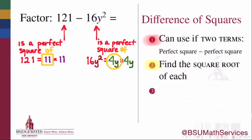Likewise, 16y squared, because it's equal to 4y times 4y, has as its square root the expression 4y. And it's those square roots, 11 and 4y, which are going to form the building blocks of how we factor 121 minus 16y squared.